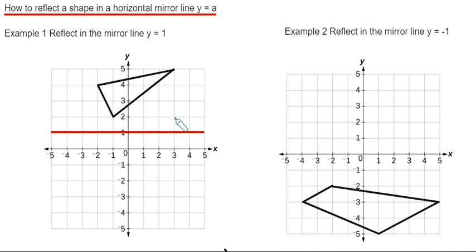So we then need to count the distance of each corner to the mirror line and then it will be the same distance on the other side. Let's start with the easiest corner here. That corner is 1 to the mirror line, so it will be 1 square on the other side.